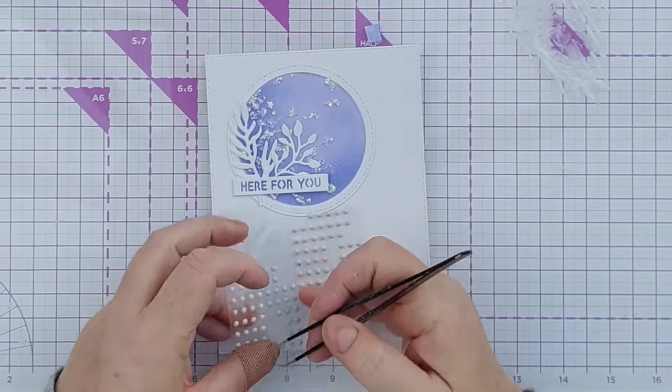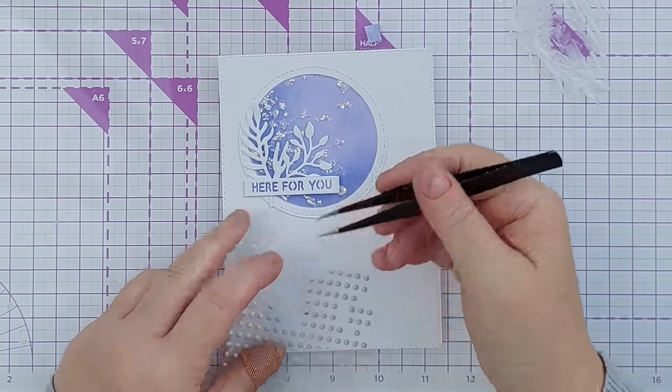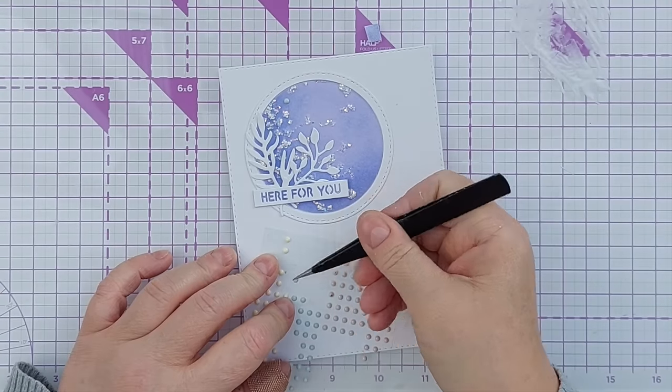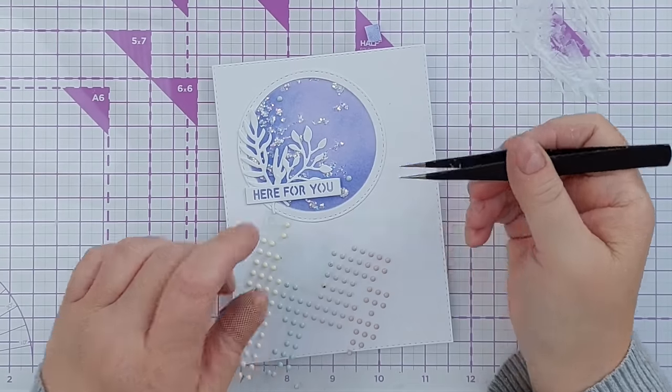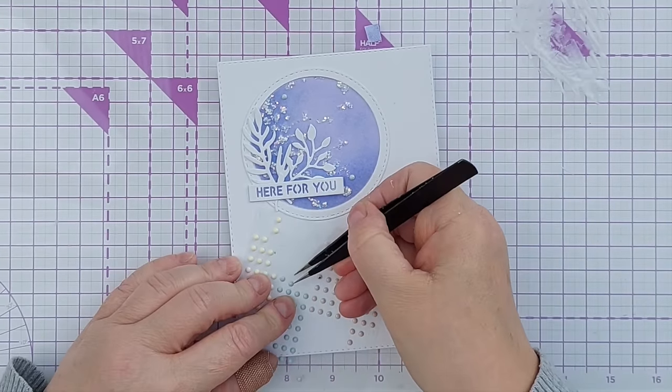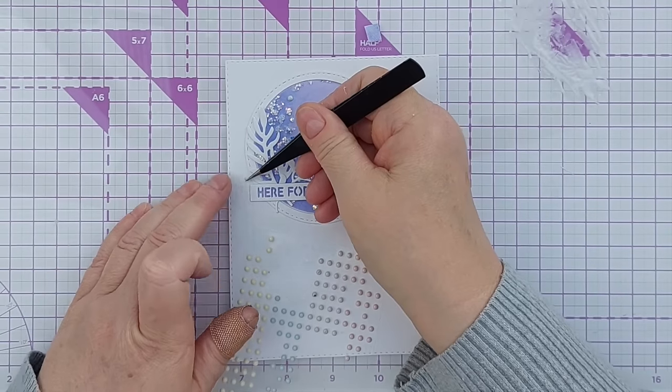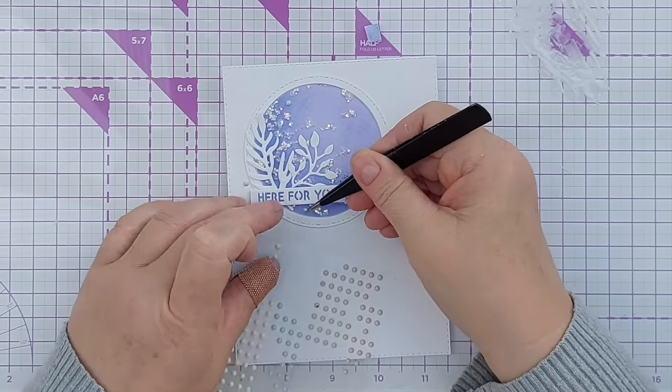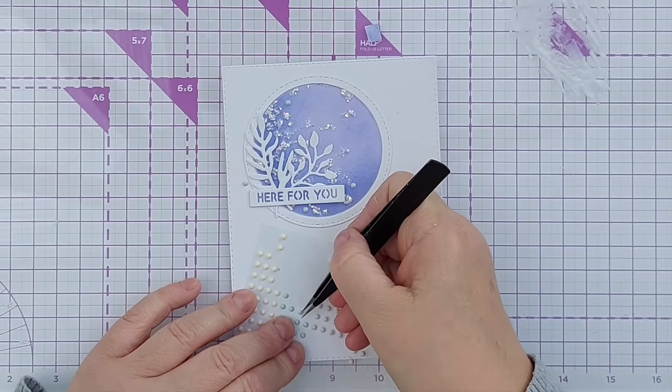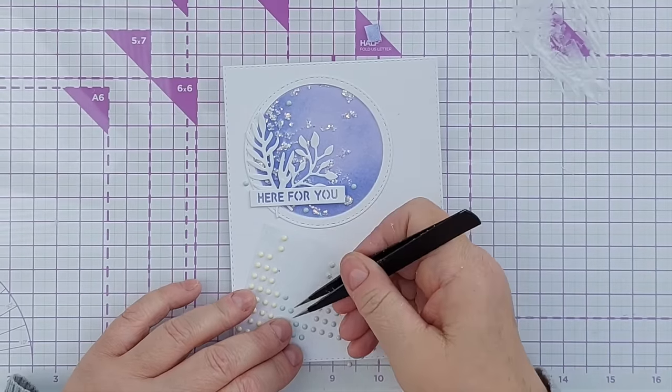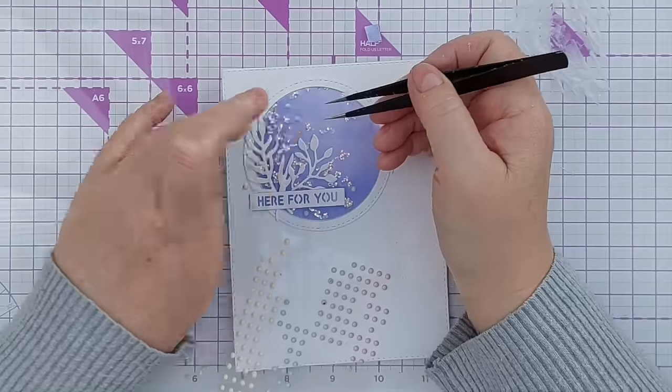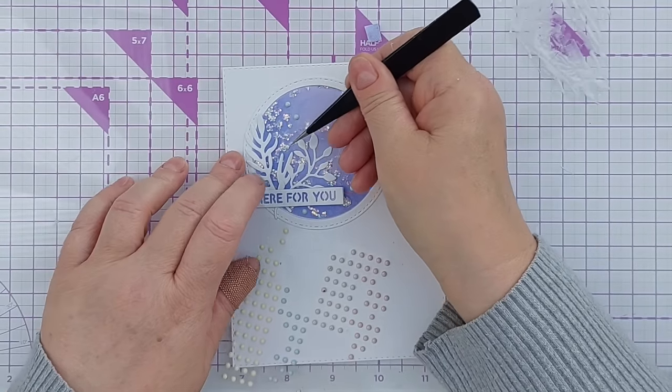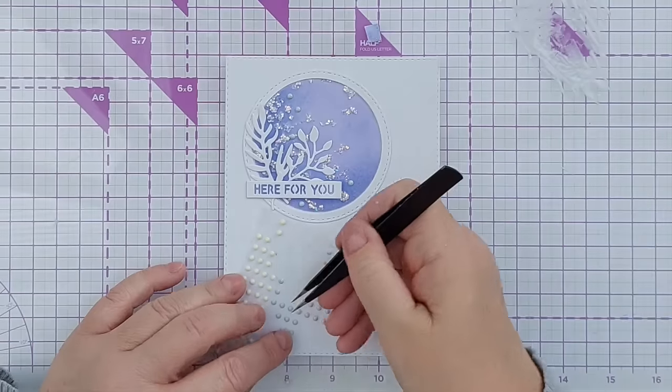And I'm thinking about adding a few enamel dots in this very pale teal. Because I do like the combination of teal and purple. It brings in another color, a bit more dimension. But they're pastel so they're not too in your face. I think we'll keep them within the circle.